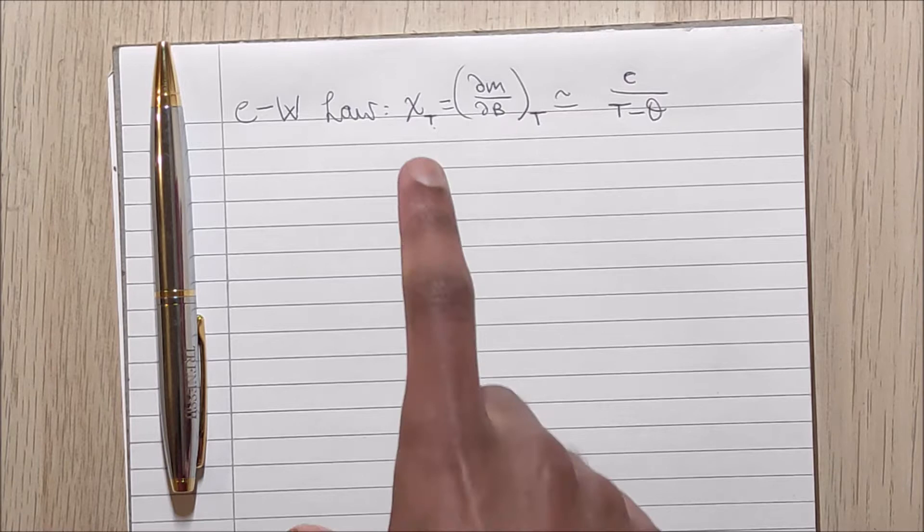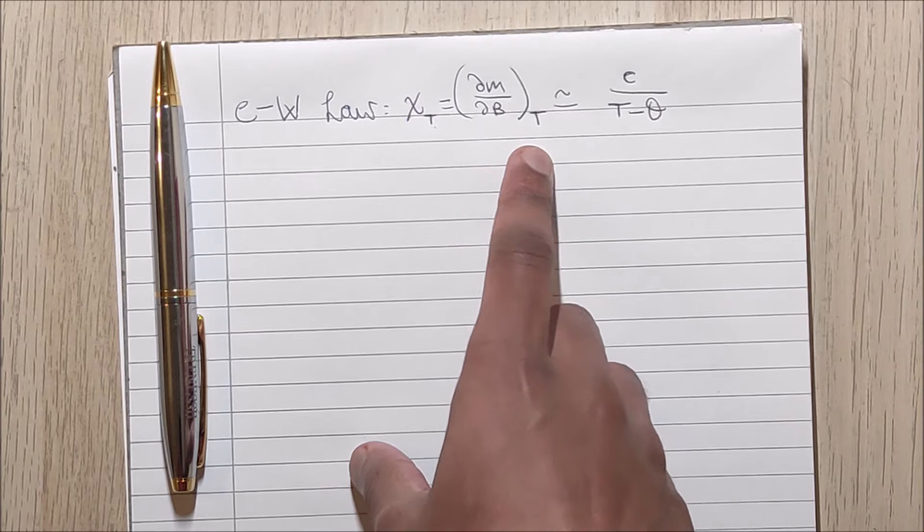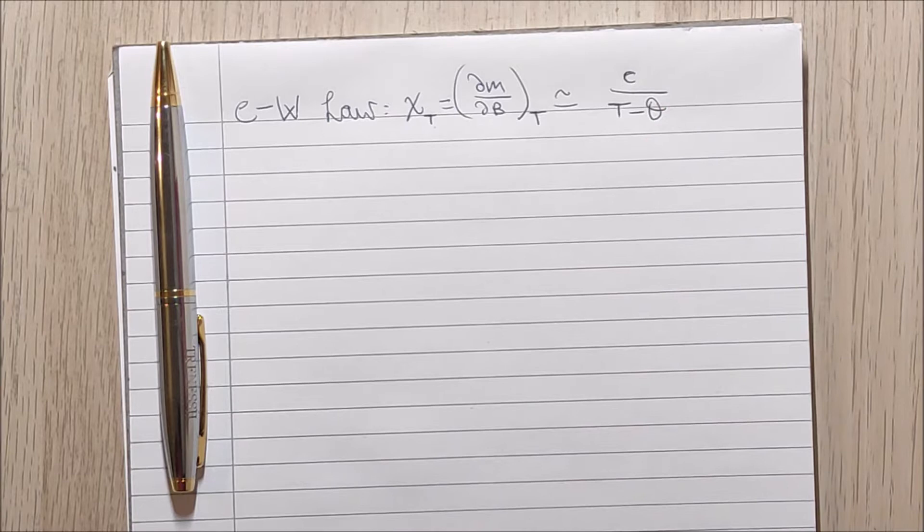This is known as the Curie-Weiss law, where chi subscript t denotes the magnetic susceptibility of the system, m is the average magnetization, b is the external magnetic field, t is the temperature, theta is the Curie-Weiss temperature, and c is the Curie constant.